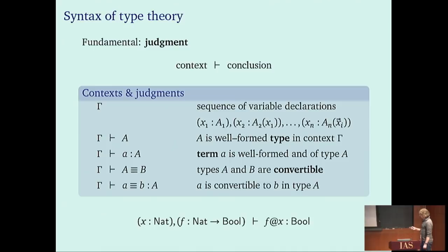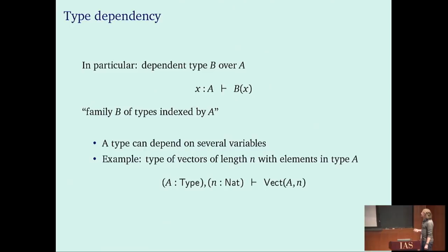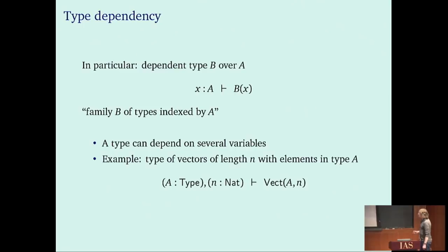A type can depend on several variables. We've already seen 'Vect A n', which depends on both a type A and a term n of type ℕ — so 'Vect A n' is a dependent type, a type family. When I write B(x), I mean that B is a type family depending on the parameter in A. Vect could be declared as primitive in our type theory, or constructed from other type constructors.